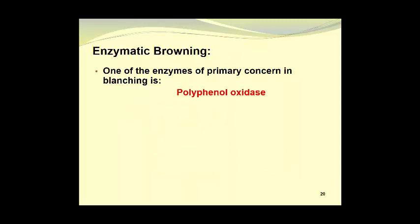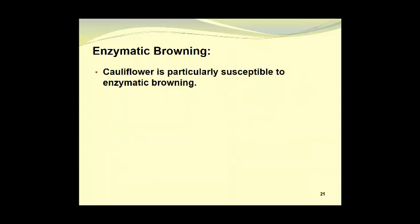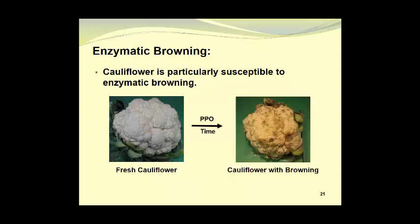One of the enzymes of primary concern in blanching is polyphenol oxidase. Polyphenol oxidase, or PPO as it is also known, catalyzes the formation of brown or black pigments in fruits and vegetables as they age. This process is referred to as enzymatic browning. Cauliflower is particularly susceptible to enzymatic browning. This fresh cauliflower has nice bright white or cream colored florets. But in the presence of polyphenol oxidase, and over time, we get the development of undesirable dark pigments, which turn the white or cream colored florets to light brown, then to dark brown, and even to purple or black. And of course, we have to remember that PPO is the abbreviation for polyphenol oxidase.